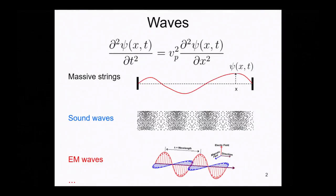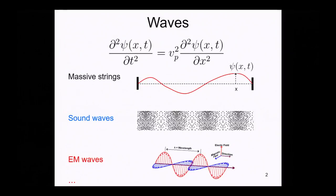We discovered the wave equation shown here. It describes three different kinds of systems: massive strings, which can oscillate up and down in the transverse direction; sound waves, which can also be described by the wave equation; and electromagnetic waves, a special kind involving two oscillating fields — the electric field and the magnetic field.